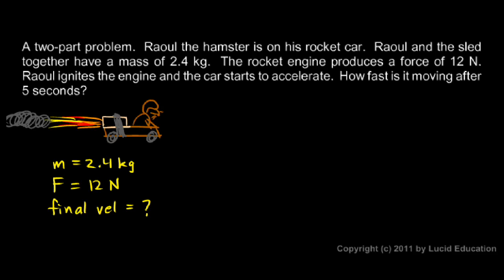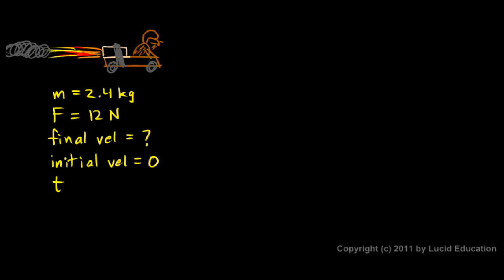But I do know the initial velocity. I'll write that down. Even though it's not stated in the problem, we can assume that he's starting from a dead stop. He's starting off motionless. So his initial velocity is 0. And then we're told to find how fast he's moving after 5 seconds. So we also know the time. So let's write that in. We'll say t equals 5 seconds.